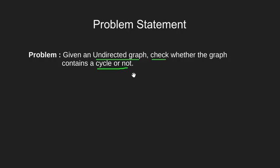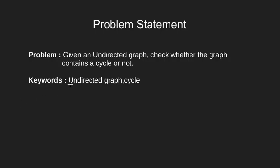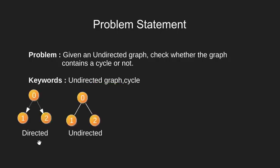If you have seen that video, you may find the approach a bit similar. Let's break down the problem statement further and understand what we mean by a few keywords used here. First, it says the graph is an undirected one. Here we see a directed and an undirected graph. Note how the edge of a directed graph has a direction from one node to another, while the edge of an undirected graph is directionless.